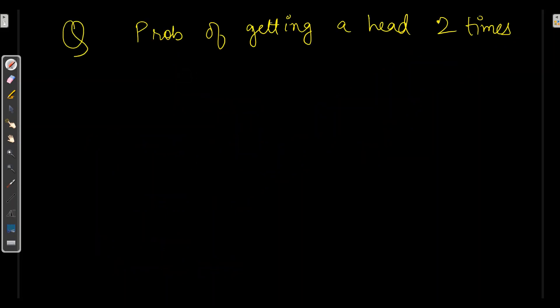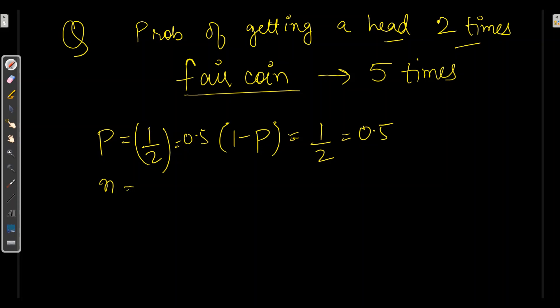Here we have to calculate probability of getting a head two times when we toss a fair coin. If we have fair coin, we will have probability as 1 by 2. And probability of failure, 1 minus P will also be 1 by 2, which I can also write 0.5 for both. And we need to toss a fair coin five times. So here we will have N is equal to 5.